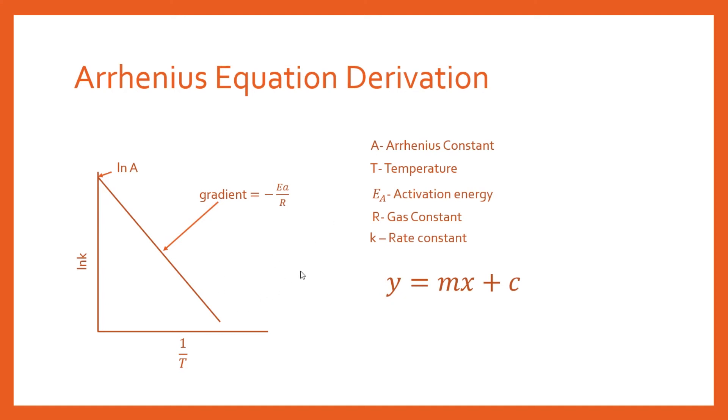When we look at the graph, we've got everything we need to substitute in. The ln K is going to be y. The gradient is m, so this is the minus EA over R. That will go in for m.